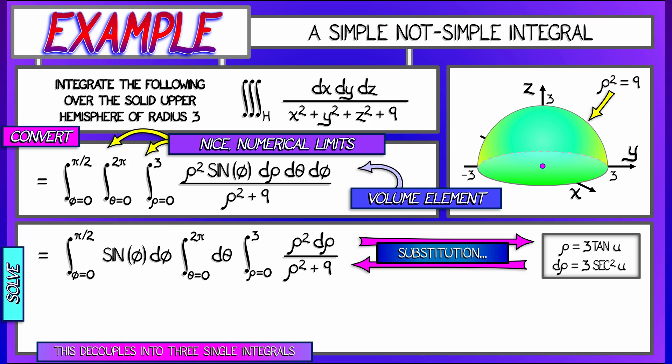But the other integrals are really nice. I get the integral of sine is minus cosine phi from 0 to pi over 2. The integral of d theta is just theta from 0 to 2 pi. Now when I do that last integral with respect to rho, I'm going to be integrating 3 tangent squared u du as u goes from 0 to pi over 4.